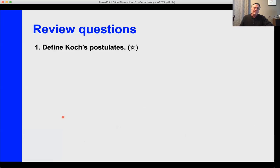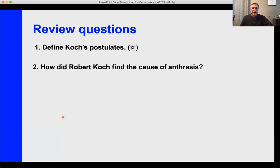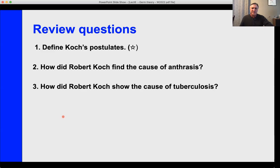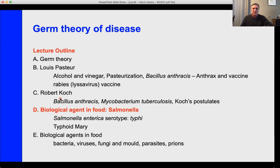Review questions: Define Koch's Postulates — one, two, three, four. How did he find the cause of anthrax? Remember that was in the fields. What was the cause of tuberculosis? That was in the tubercules of sick individuals. And two suggestions for public health — I talked about anthrax and tuberculosis. That's Robert Koch's contributions to microbiology. Next I'll talk a little bit about Salmonella, and then finally a little bit about biological agents in food.